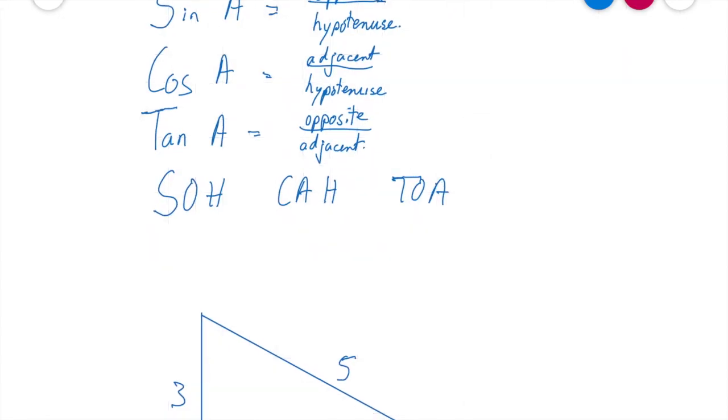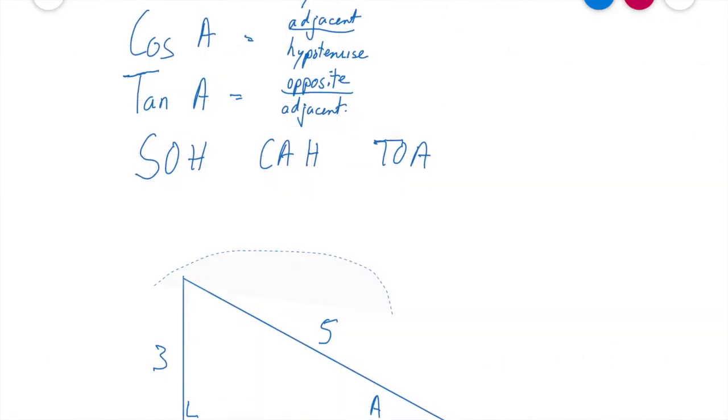So let's put this into practice in a real triangle. So let's look down here. I've got a right angle triangle, not drawn to scale naturally enough, with a side of 5, 3, and 4.